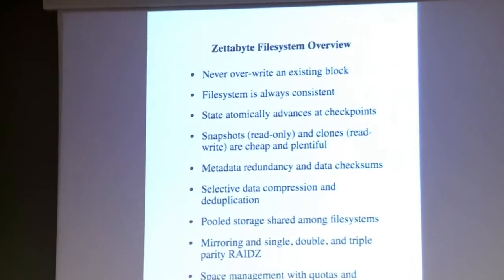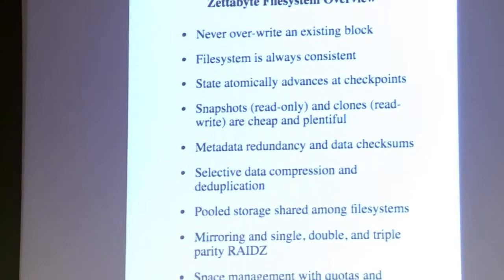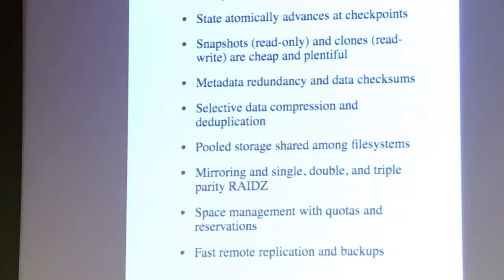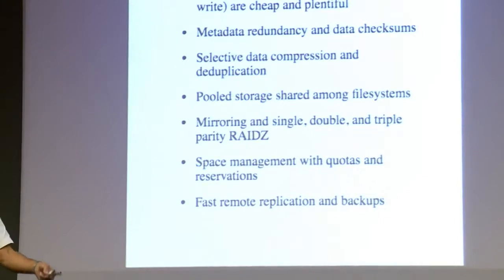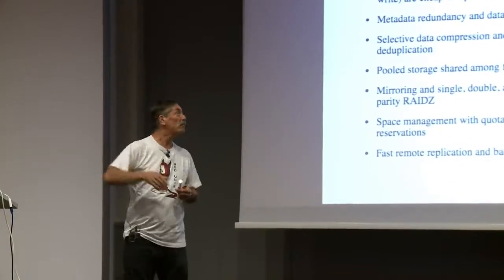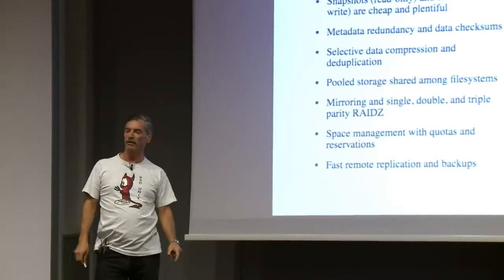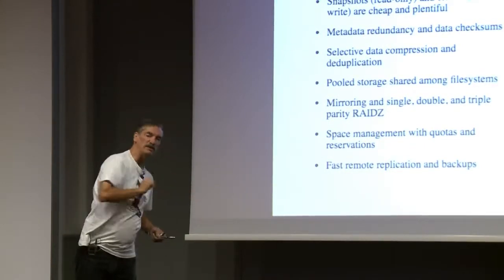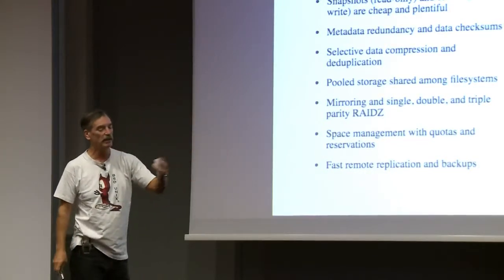Because it's a non-overwriting file system, you don't have the problems traditional file systems have where it can become inconsistent — where you've updated some things but not others, and the file system has to be either rolled back using a log, a journal, FSCK, or whatever your poison is. In a non-overwriting file system, it is always consistent. You have a consistent version of the file system and you're going to move from one consistent version to another. You'll write everything out that needs to be changed, and the last step is that you create the checkpoint by writing a new uber block. Either that write has occurred or it hasn't — if it hasn't, you have the old consistent version; if it has, you have the new consistent version. You're never at a point where the file system is inconsistent. You just atomically step forward checkpoint by checkpoint.